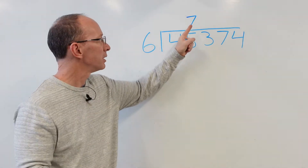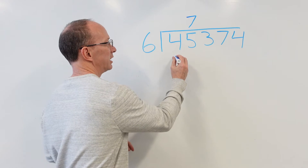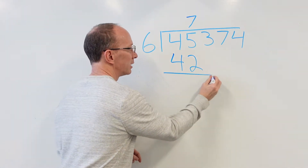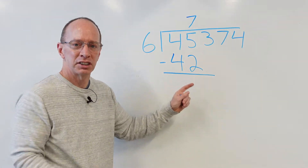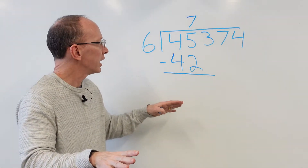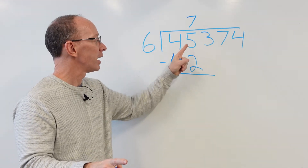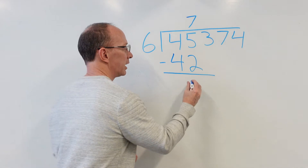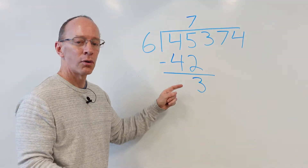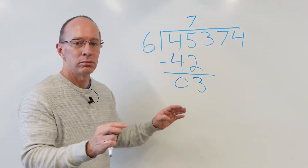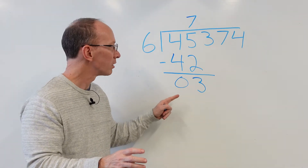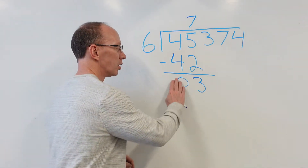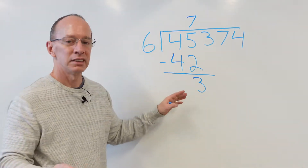Now I multiply — that's our next step. 7 times 6 is 42. Put the 42 right there. Now put a line under here, and our next step is subtraction. We subtract: 5 minus 2 is 3. Put the 3 here. 4 minus 4 is zero. Don't put that zero there — you don't say 45 minus 42 equals 03. No, you don't need to put a zero there. Just leave it blank.